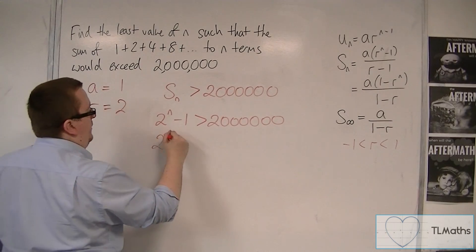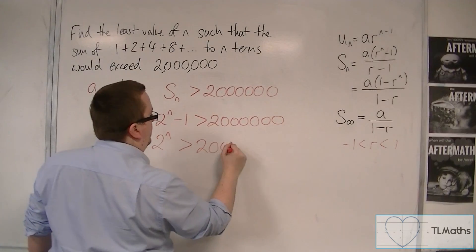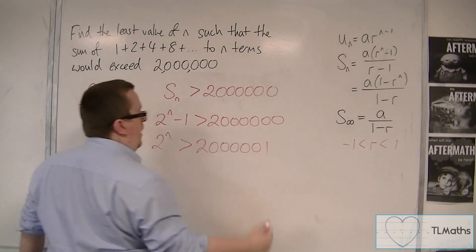Add 1 to both sides. So we have 2 million and 1.